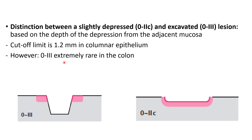Type 3 is extremely rare in the colon. Type 1B and type 2B are also rare in the colon; type 2B is more common in the esophagus. This shows the excavated lesion and the slightly depressed lesion with their respective measurements.